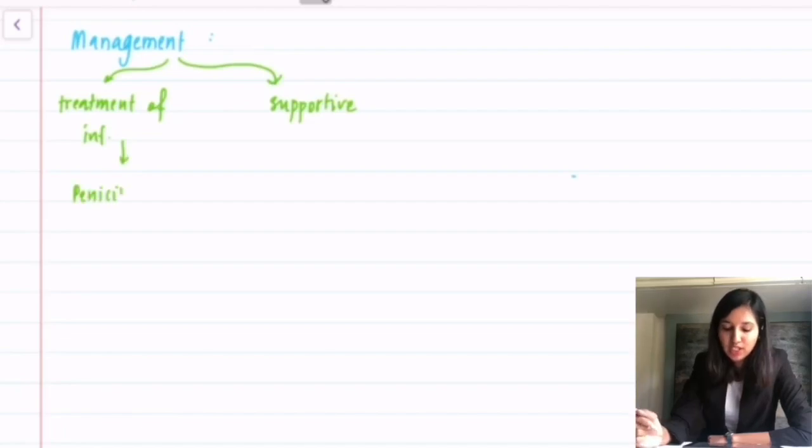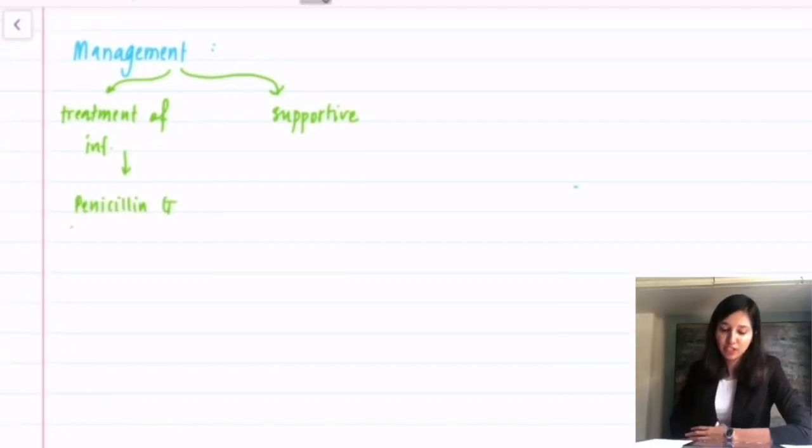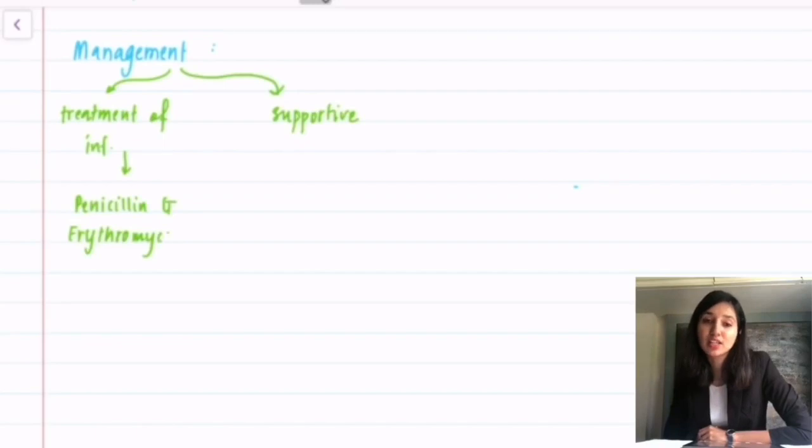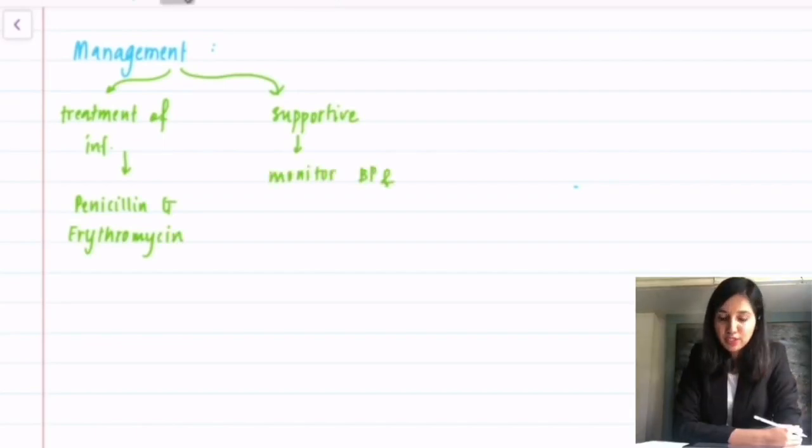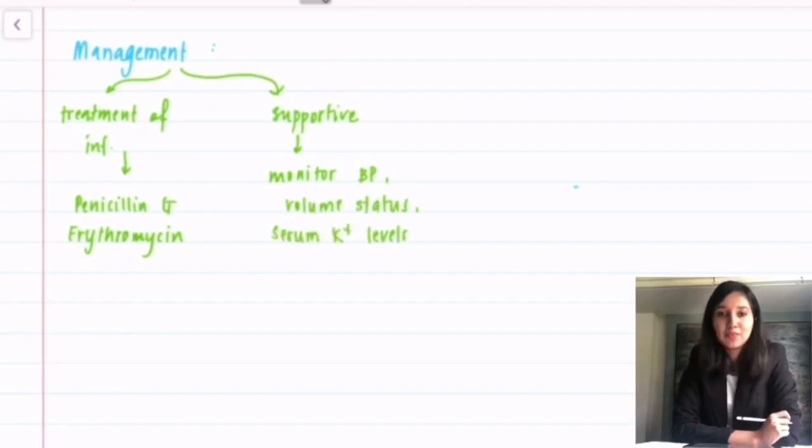Now, for the management, we have two modalities. First, we need to treat the infection. Then, we need to give the supportive treatment. Penicillin G can be used for the treatment of the infection. If the patient is allergic to penicillin G, we could go for erythromycin. For supportive measures, we need to monitor blood pressure, volume status and serum potassium levels and give ACE inhibitors and diuretics accordingly.